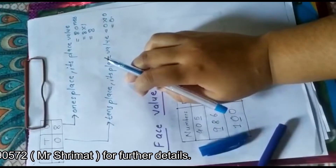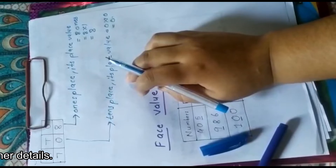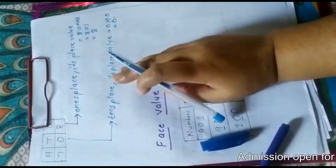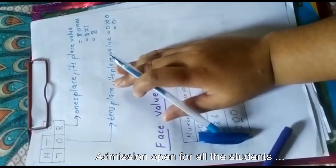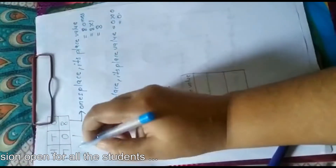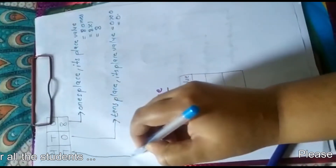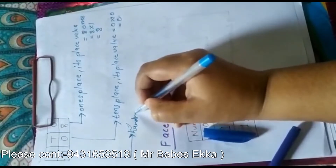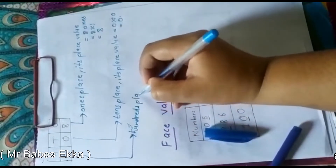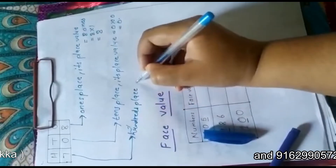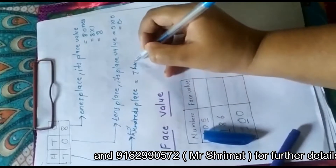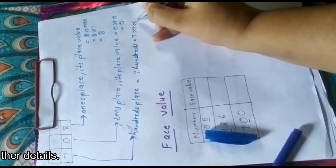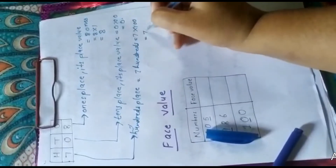Children, you have to keep one thing in mind: the place value of 0 is always 0. No matter what position 0 is in — whether it is at ones, tens, or hundreds — its place value is always 0. Now 7 is at hundreds place, so its place value will be 700, which means 7 into 100 equals 700.